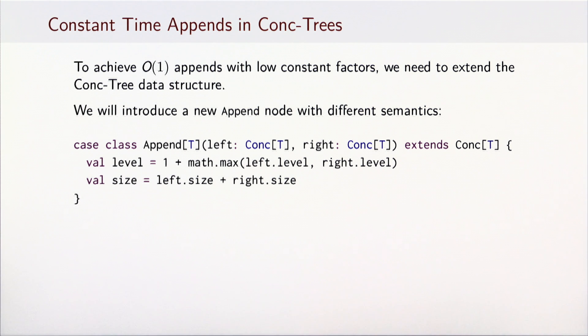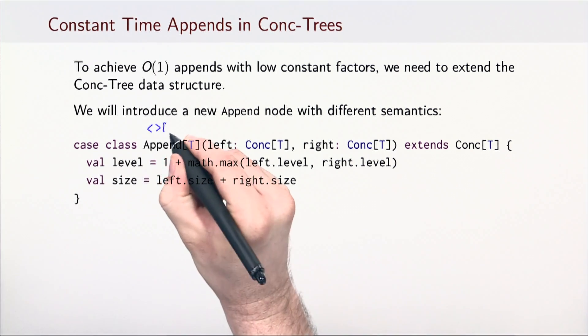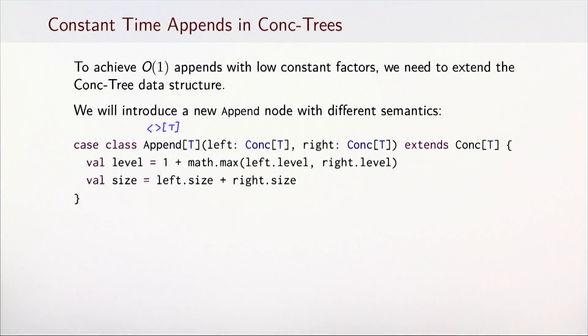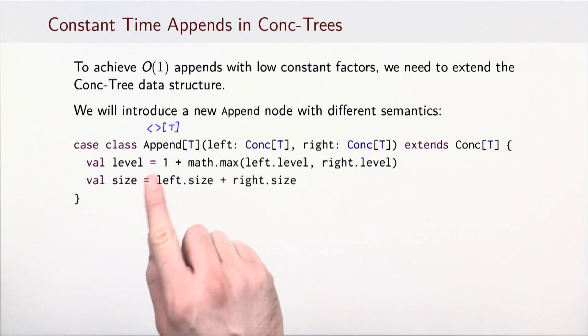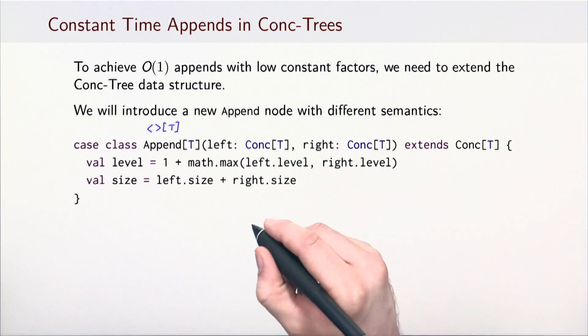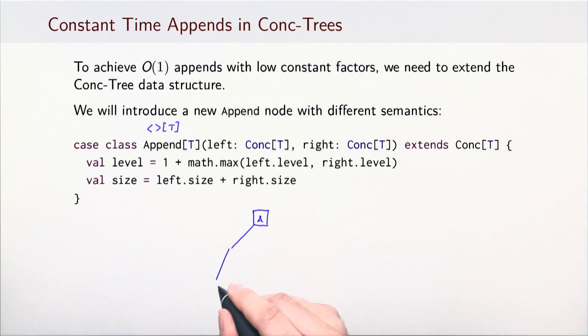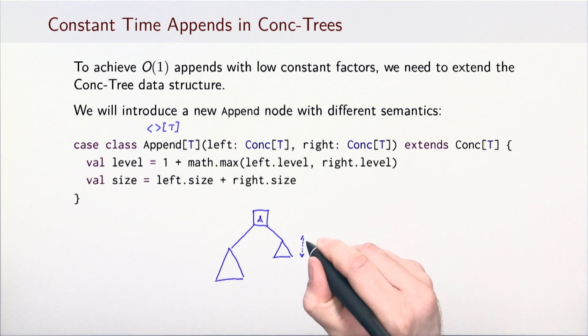The idea will be to represent the result of a plus-equals operation differently. For this reason, we will introduce a new type of node called Append. The Append node has exactly the same structure as the conc node does. It has a left and a right subtree, and its level and size are defined in exactly the same way as they were for conc nodes. However, we will not impose the previous balance invariant on the Append nodes. We will allow arbitrary difference in levels between the left and the right child.